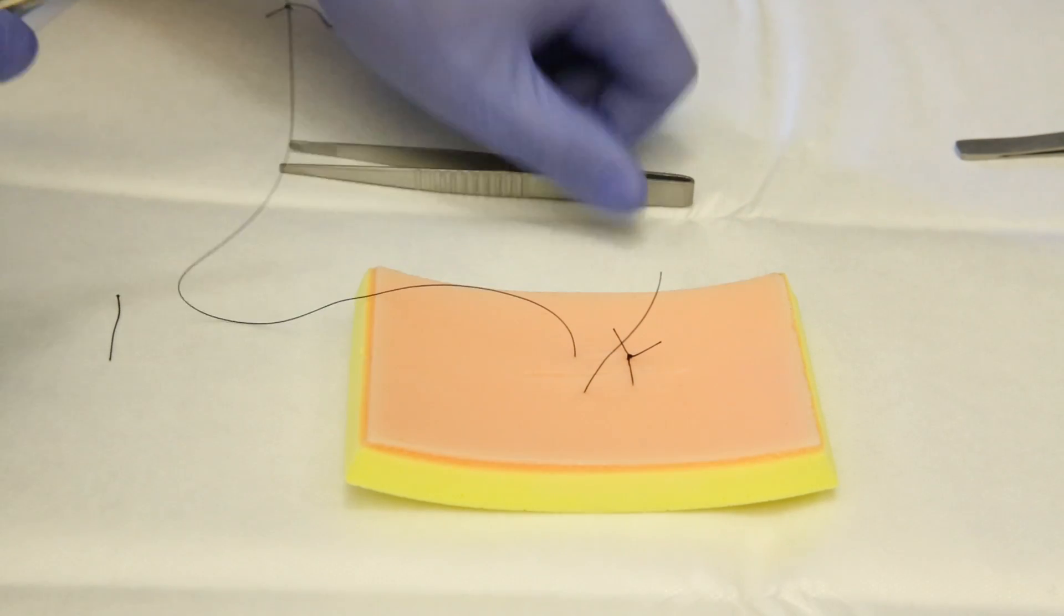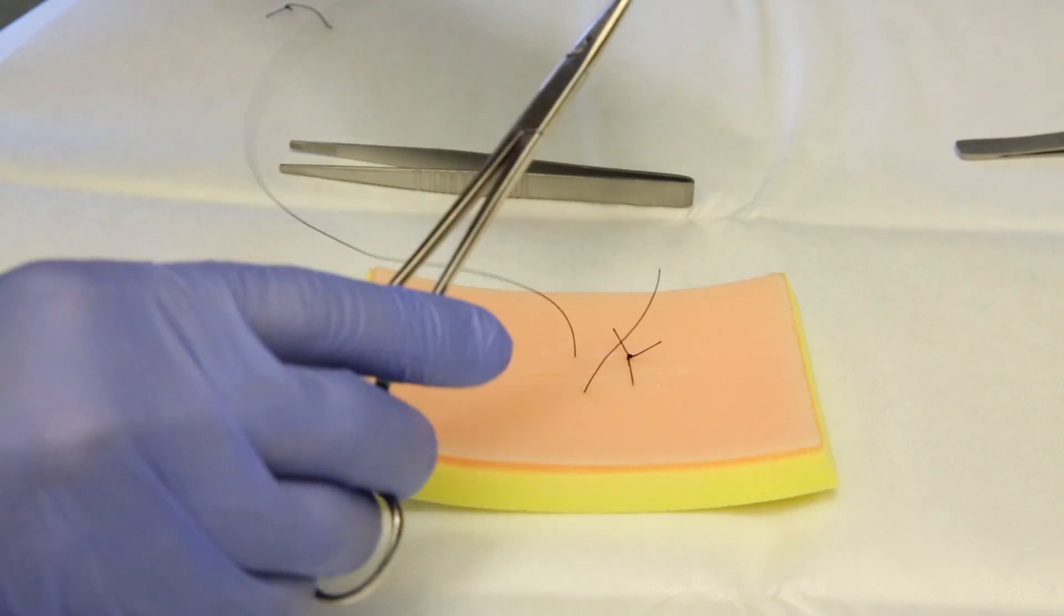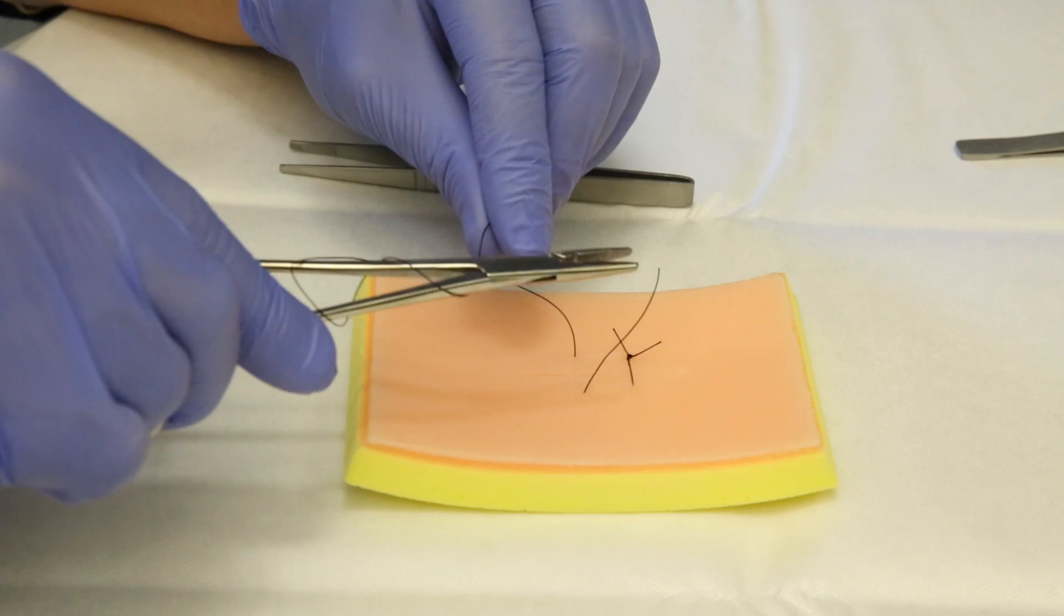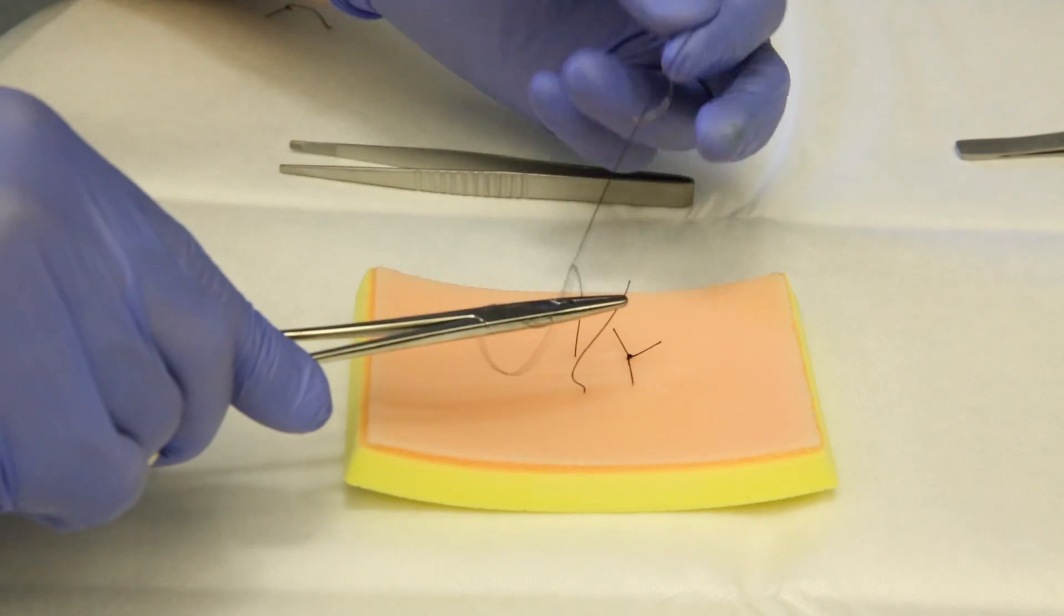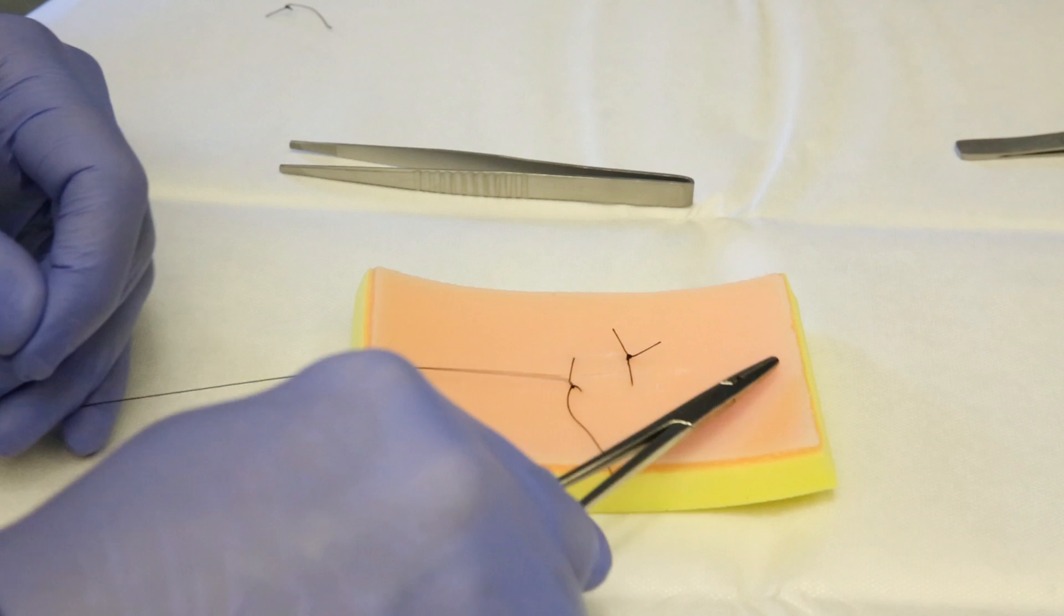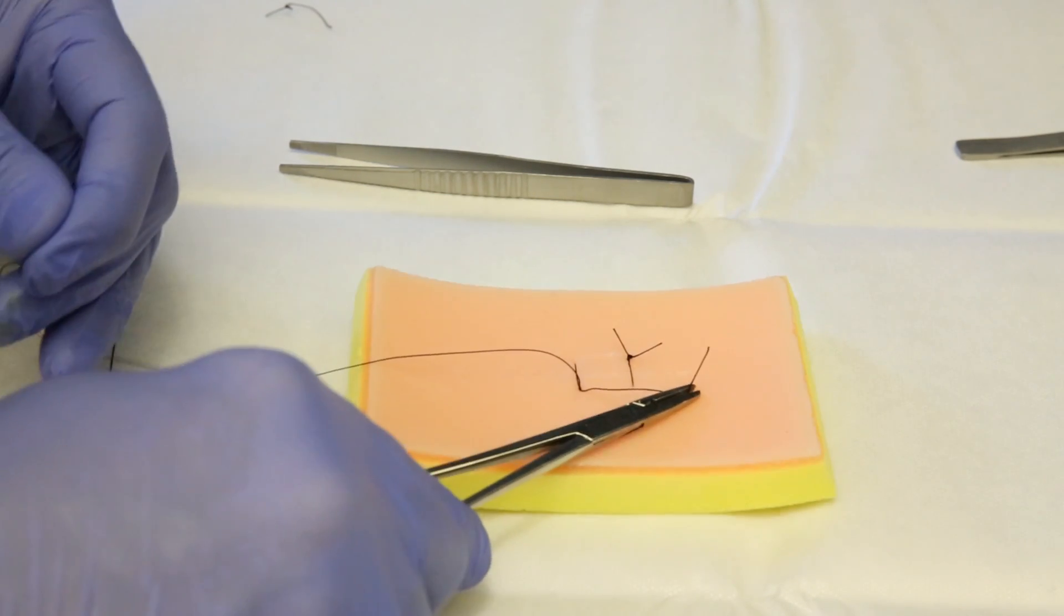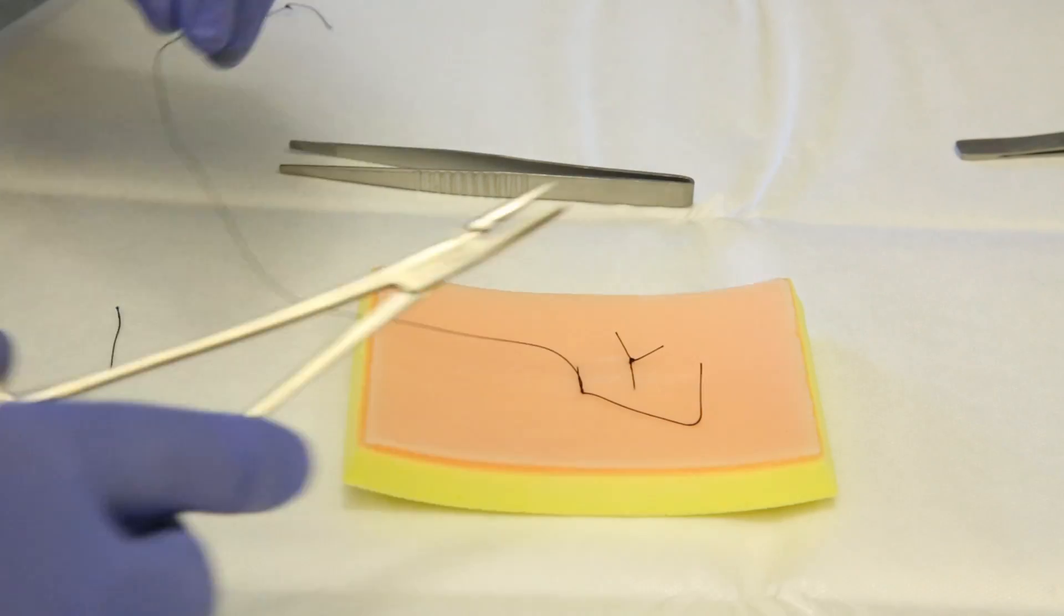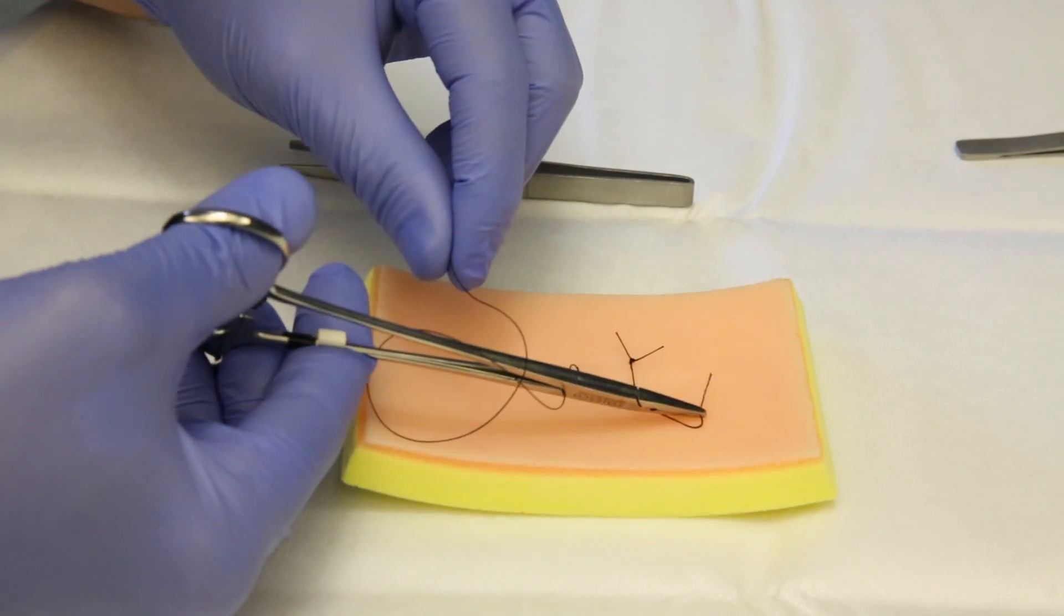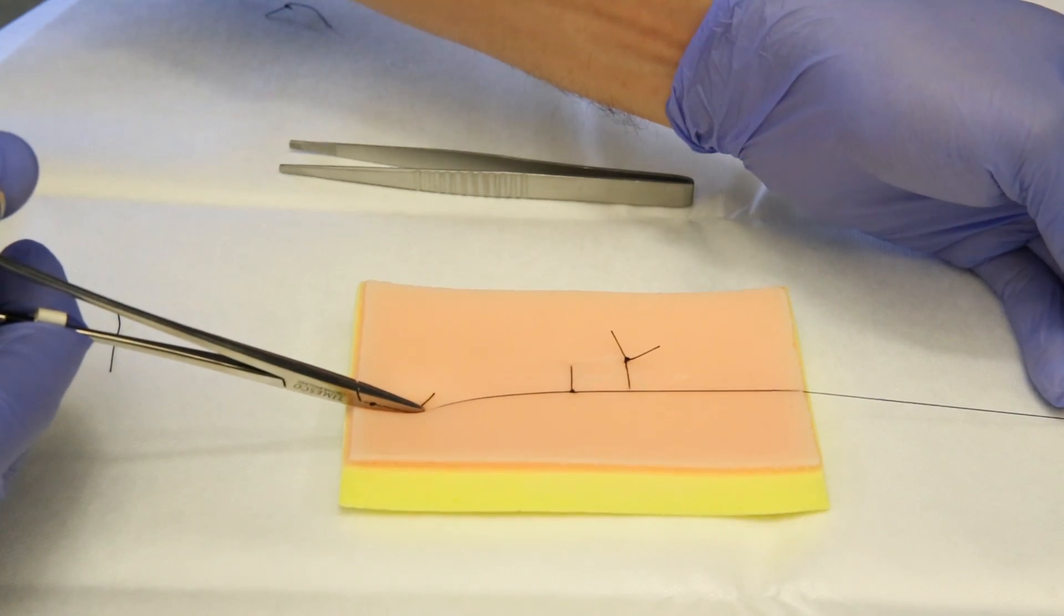The thread now across the wound margin, making the instrument knot to turn around the needle holder, taking the other end, pulling the thread parallel to the wound, repeating it on the opposite side. Making the second knot here.